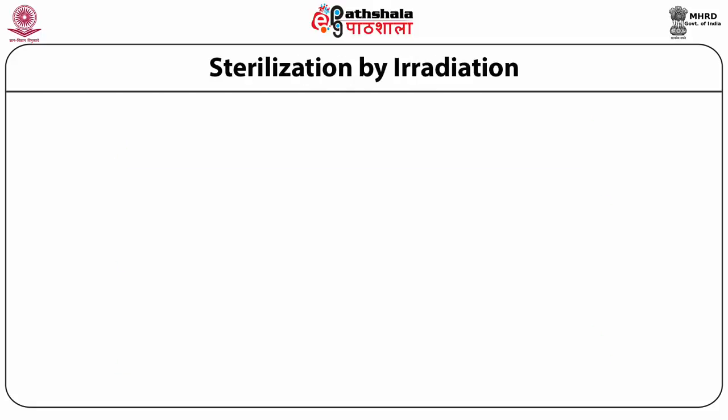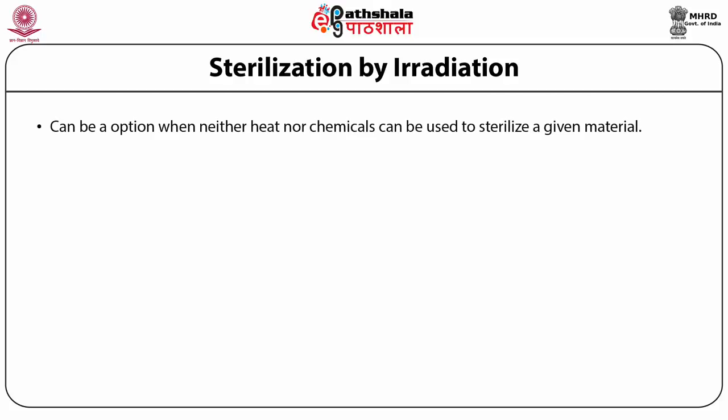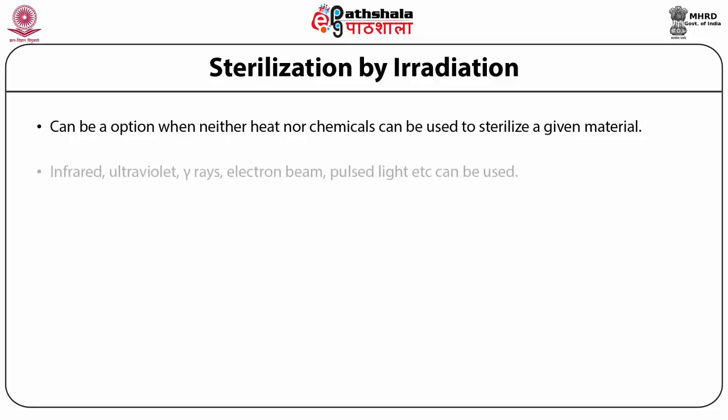When neither heat nor chemicals can be used to sterilize a given material, radiation is considered as an option. Electromagnetic radiation, characterized by frequency, wavelength, penetrating power, and energy range, includes infrared, ultraviolet rays, electron beam, pulsed light, and others.